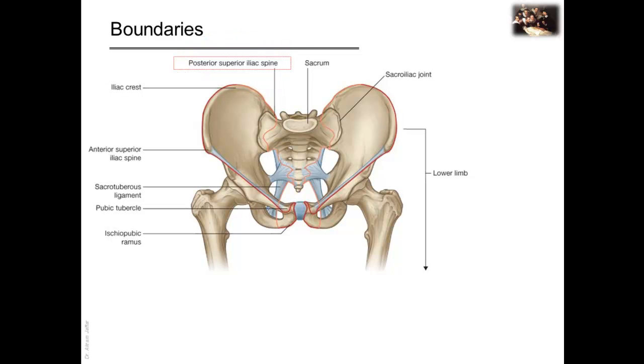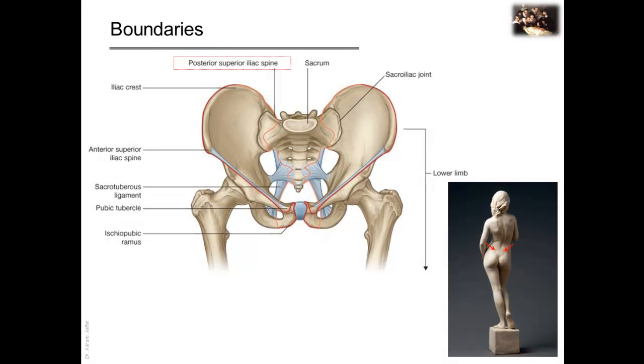Again, you can feel your iliac crest and locate the position of the posterior superior iliac spine, which is indicated by a skin dimple on the back. For those of you who have studied the back, you might recall that the dimples are at the level of S2 segment, and they coincide with the termination of the spinal subarachnoid space.